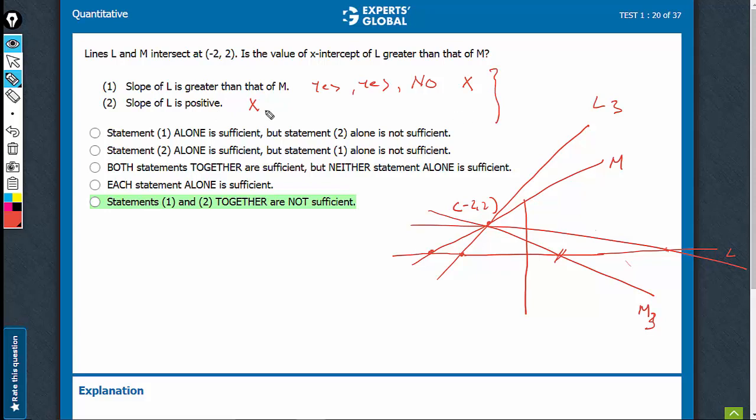On combining, also, even when slope of L is positive, we have this case. In the initial case, let's draw one more line. In this case, L1 versus M1, slope of L is positive. Slope of M is also positive and we are getting yes as an answer that, see, this intercept is greater than this. We are still getting yes.